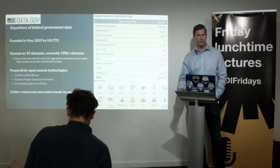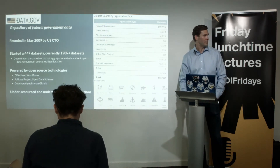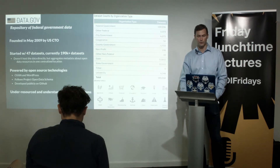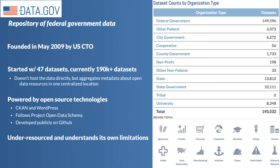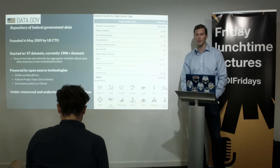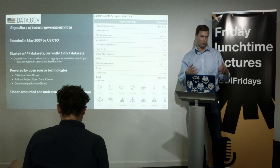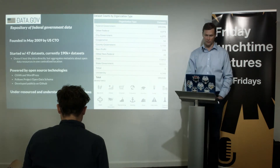Actually before the directive came out, they launched Data.gov — a repository of federal data. The CTO said, 'I'm not waiting for a directive, I'm just launching this.' It started with 47 datasets and has now grown to 190,000 datasets. You have Data.gov.uk with about 45,000 to 50,000 — similar in size if you adjust for population.